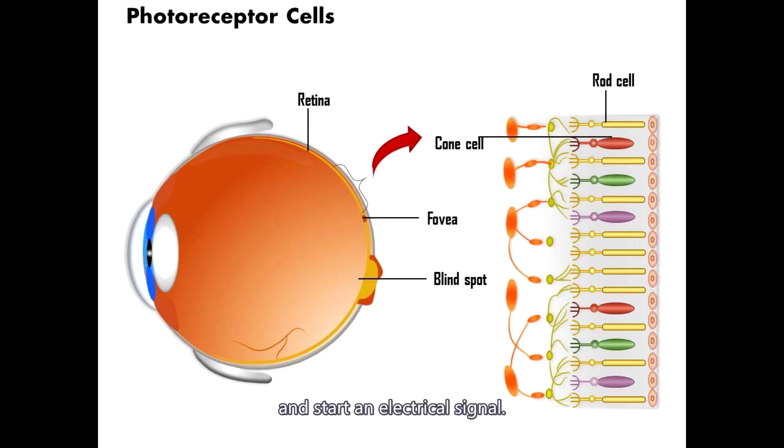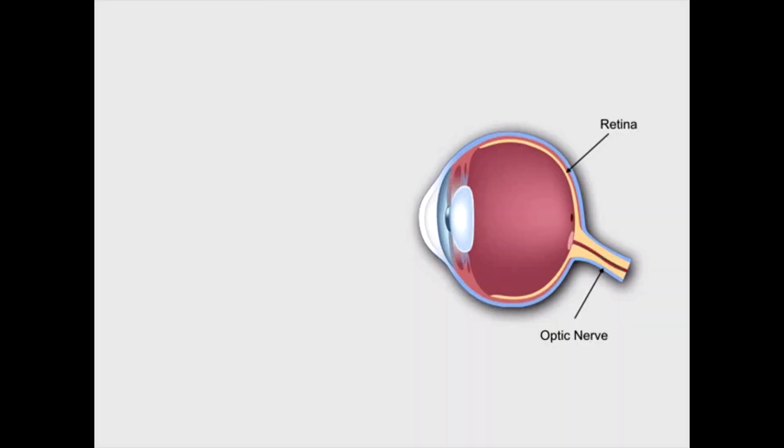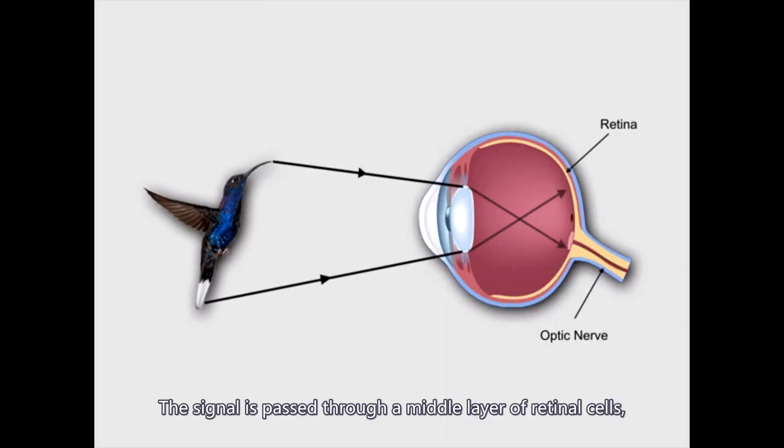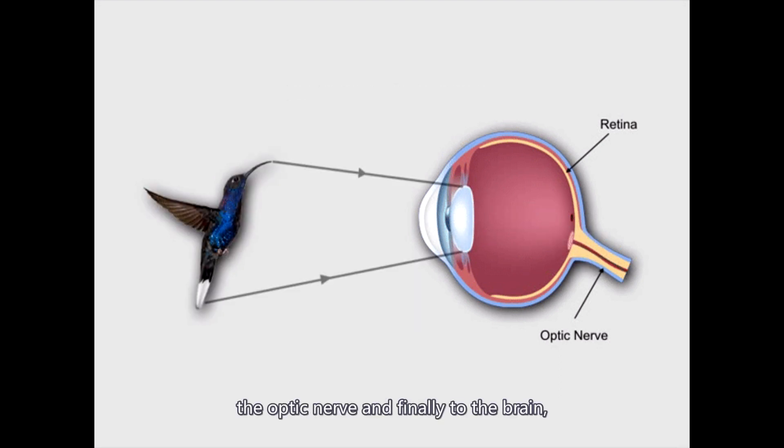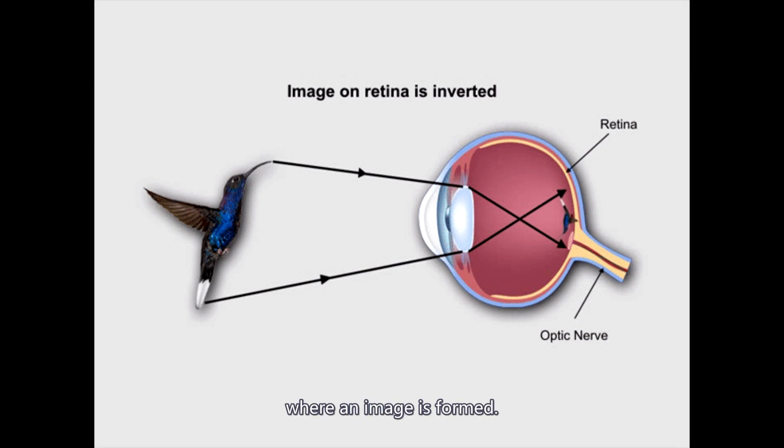Photoreceptor cells sense light and start an electrical signal. The signal is passed through a middle layer of retinal cells, the optic nerve, and finally to the brain where an image is formed.